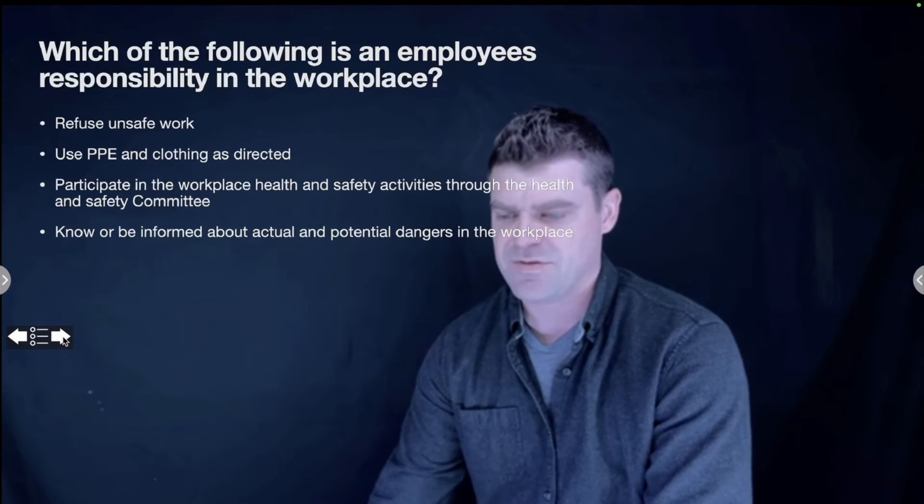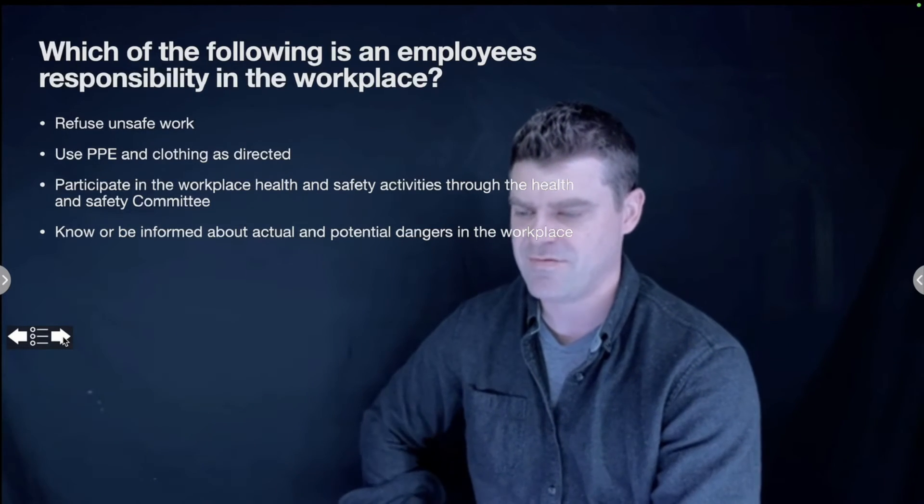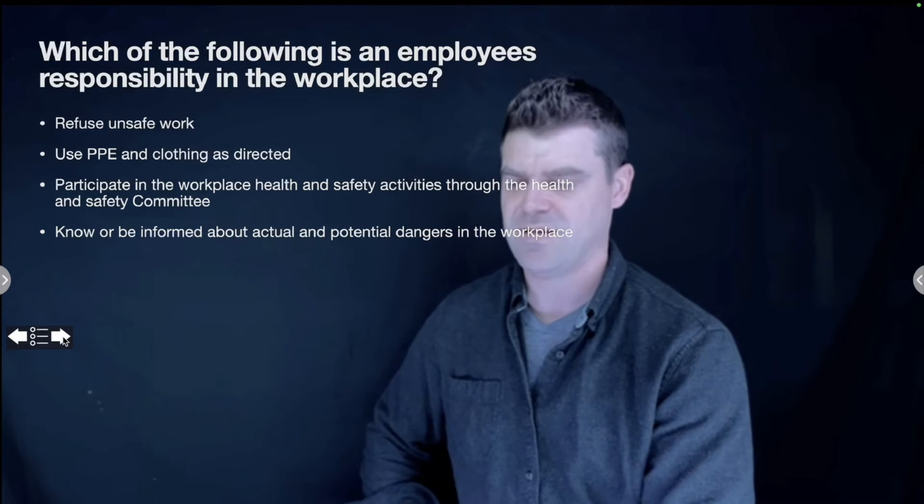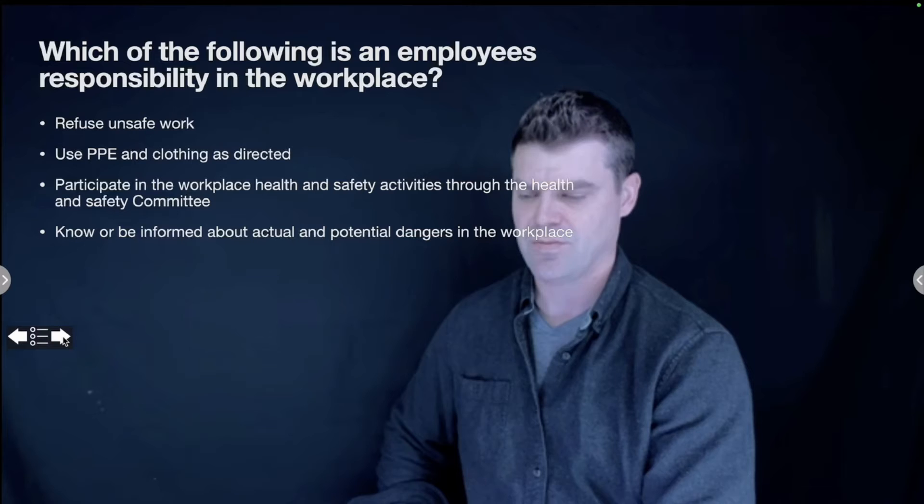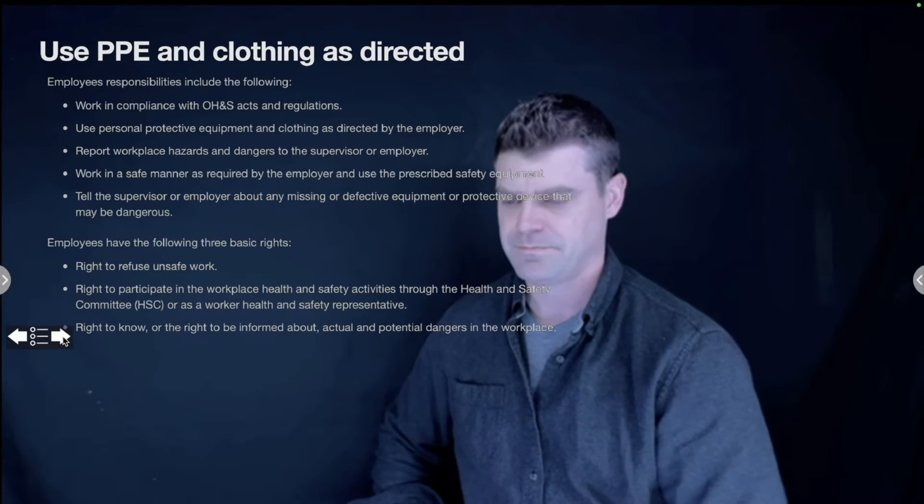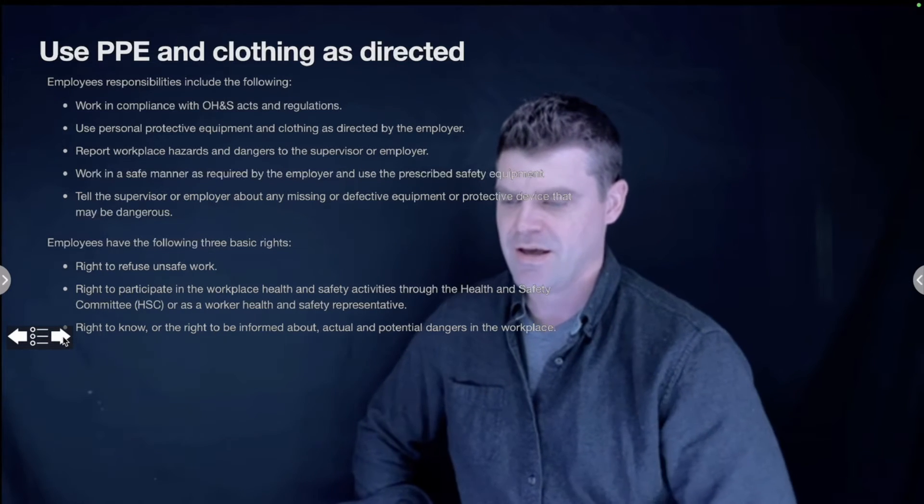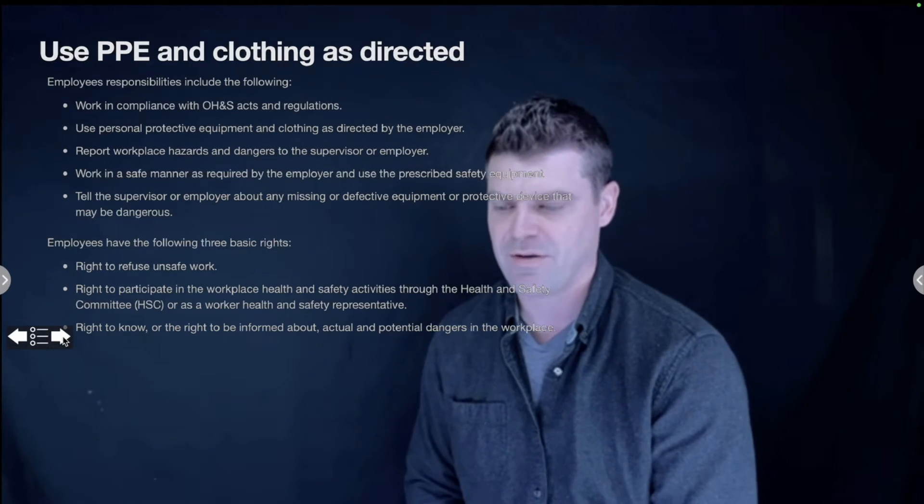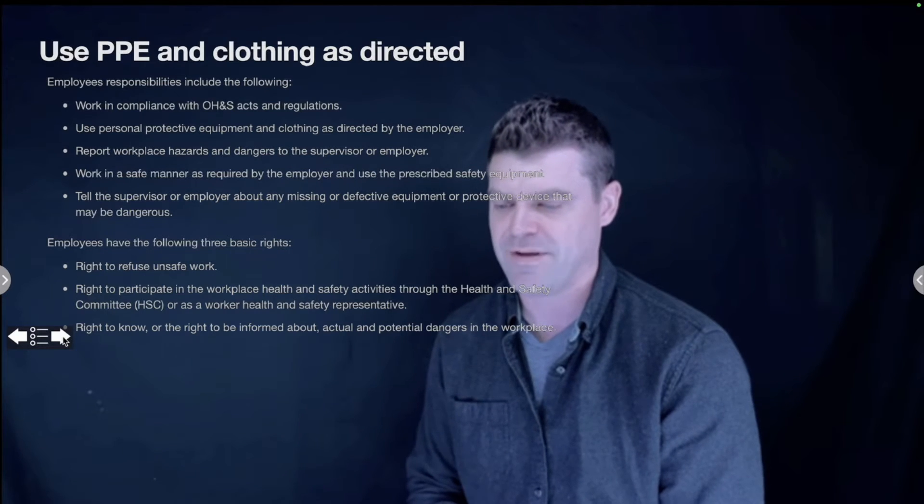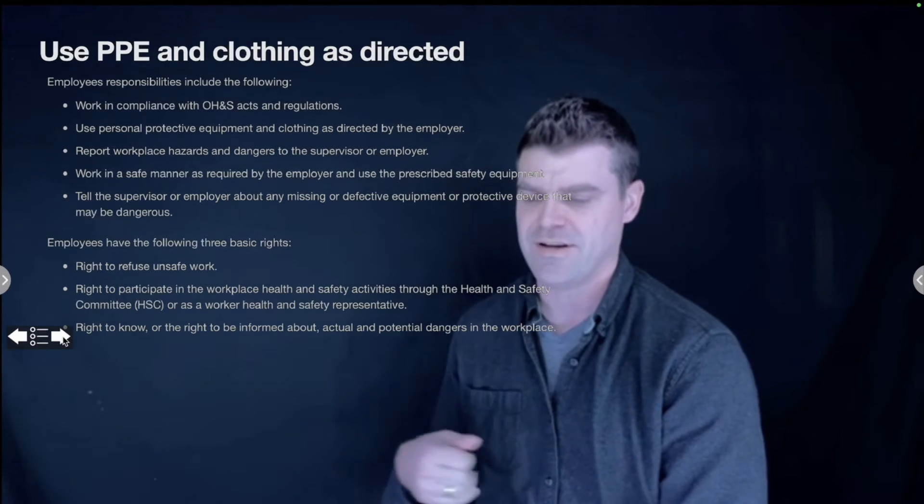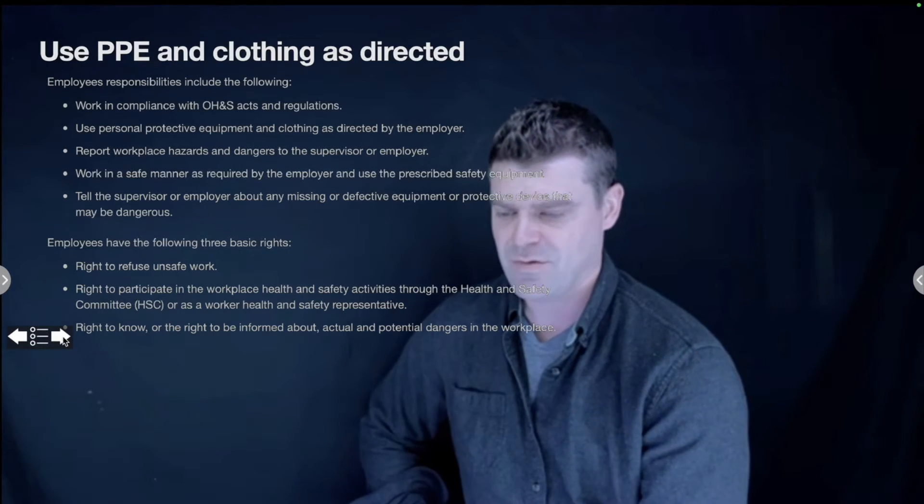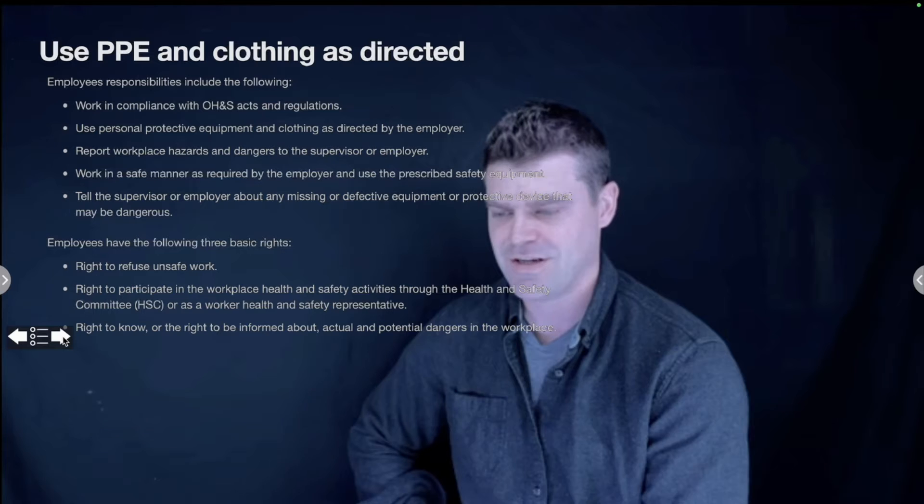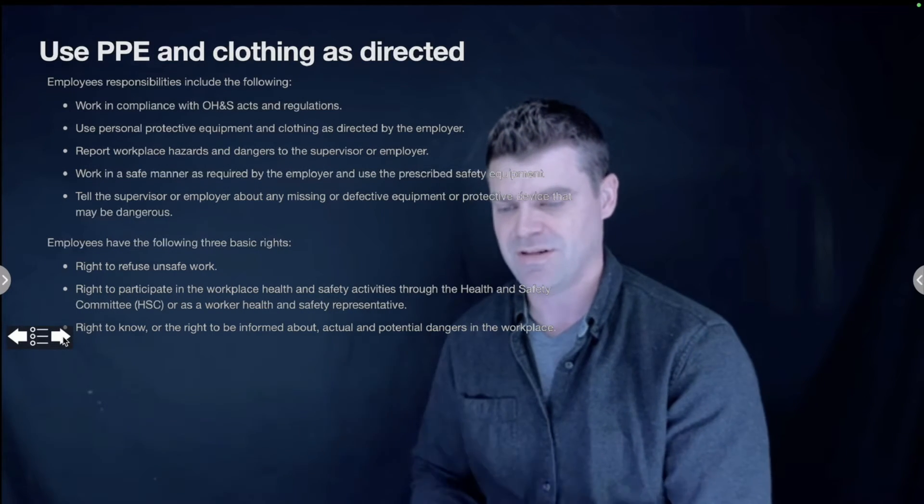Which of the following is an employee's responsibility in the workplace? Refuse unsafe work, use PPE and clothing as directed, participate in workplace health and safety activities through their health and safety committee, or know or be informed about actual potential dangers in the workplace? The answer is to use PPE and clothing as directed. There's a difference between your responsibilities and your rights. Your responsibility is to work in compliance with occupational health and safety, to use PPE, to report workplace hazards, to work in a safe manner, and to tell your supervisor if there's anything unsafe. Your rights are to refuse unsafe work, to participate in your health and safety committee, and to know about any potential hazards. In the question, I put three rights and one responsibility.